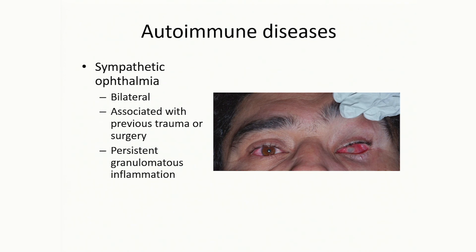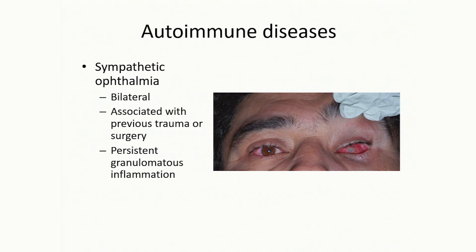When we think about autoimmune diseases, the canonical one is sympathetic ophthalmia. This unfortunate gentleman took a BB to the eye, which basically ruptured it — this is what we call phthisis, with an opacified cornea and detached retina. If the eye is not enucleated and significant amounts of uvea are exposed to the immune system, because of ocular immune privilege, the thymus never got a good shot at the unique intraocular antigens, and you end up with sympathetic ophthalmia, where the good eye becomes subject to a chronic autoimmune attack. This is why we frequently enucleate severely injured eyes within two weeks.